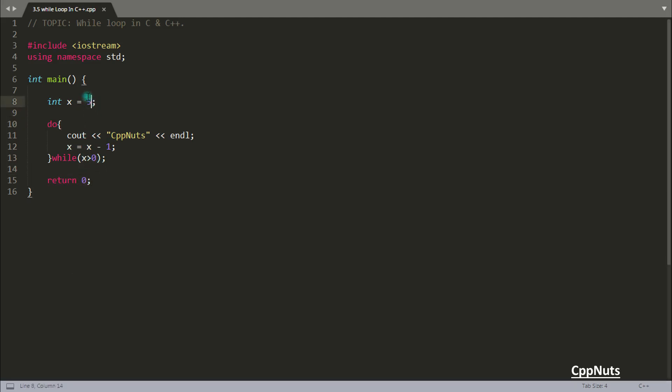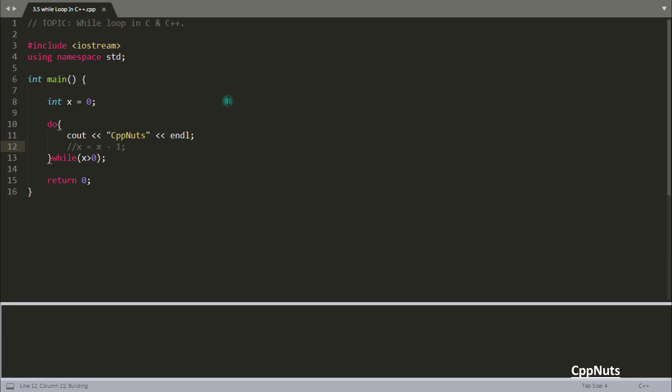As I said, if this x is 0, then also this will print this statement. And for that case, just comment out this statement here. And if you will run this, see, it still executed our cpp nuts one time and then only it is exiting.